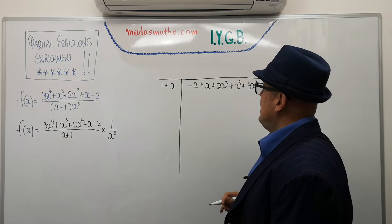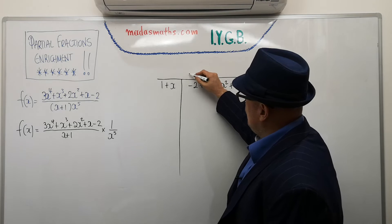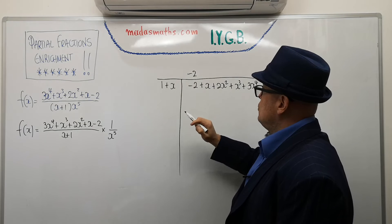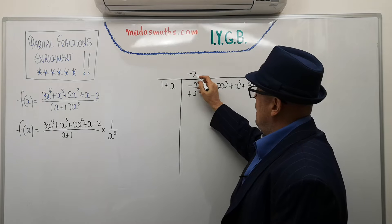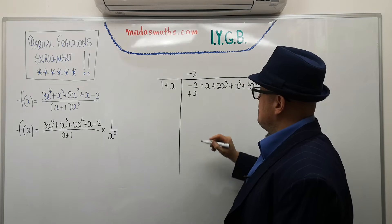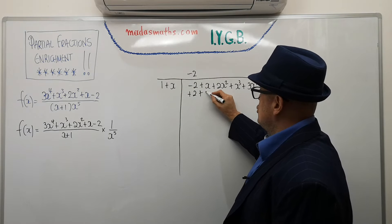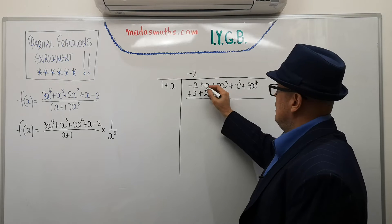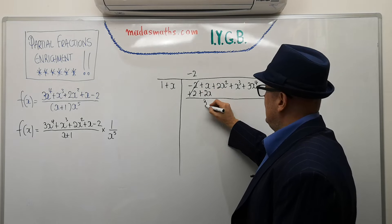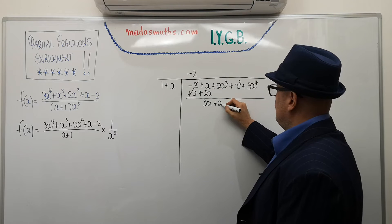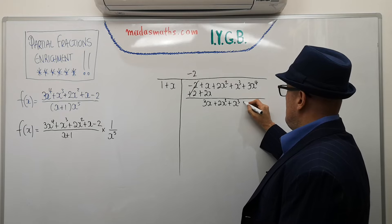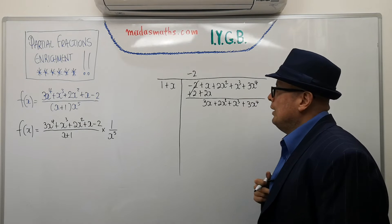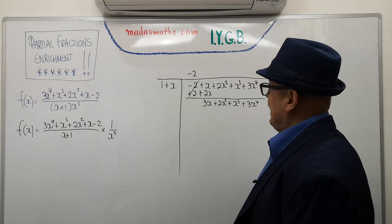1 into minus 2. It goes, of course, quite clearly minus 2 times. 1 times minus 2 is minus 2 plus 2. Minus 2 times x, minus 2x plus 2x. I'll draw a line here all the way across. And this will cancel. And I'm going to get 3x plus 2x squared plus x cubed plus 3x to the power of 4. Okay. What happens next? I'll repeat.